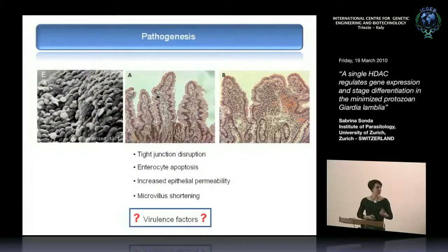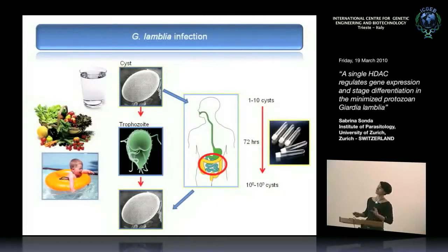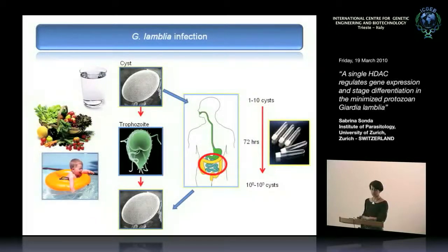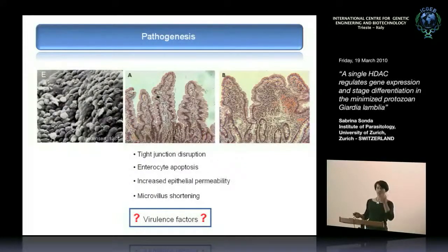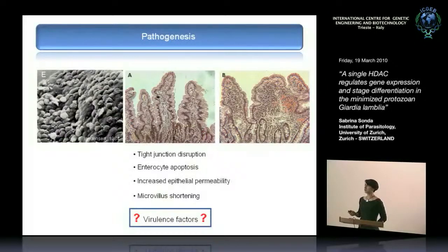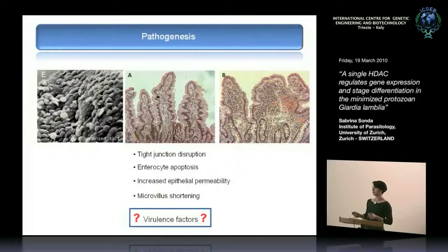In the intestine, the trophozoite has a complex structure with dorsal and ventral sides. On the ventral part there is a disc important for adhesion to the intestinal wall — a mechanical sucking process. Once attached, the parasite creates damage by disrupting the tight junctions of the enterocytes. The epithelial cells then undergo apoptosis, inducing increased epithelial permeability and diarrhea, followed by shortening of the microvilli, leading to malabsorption and associated problems.